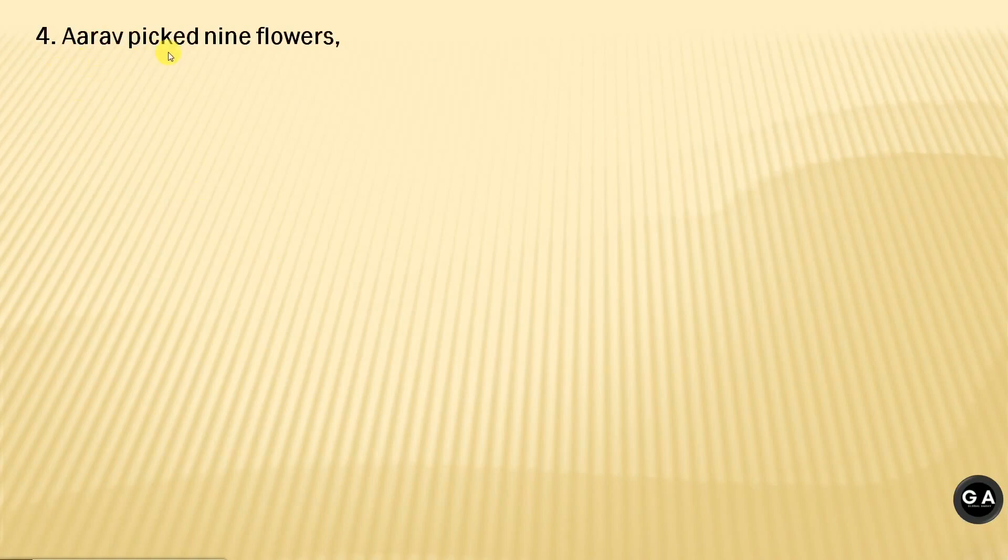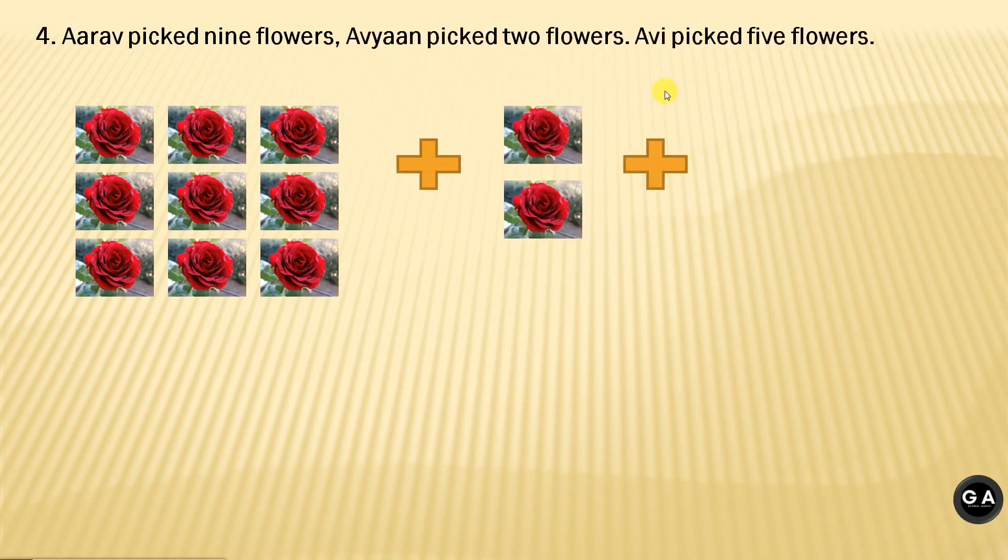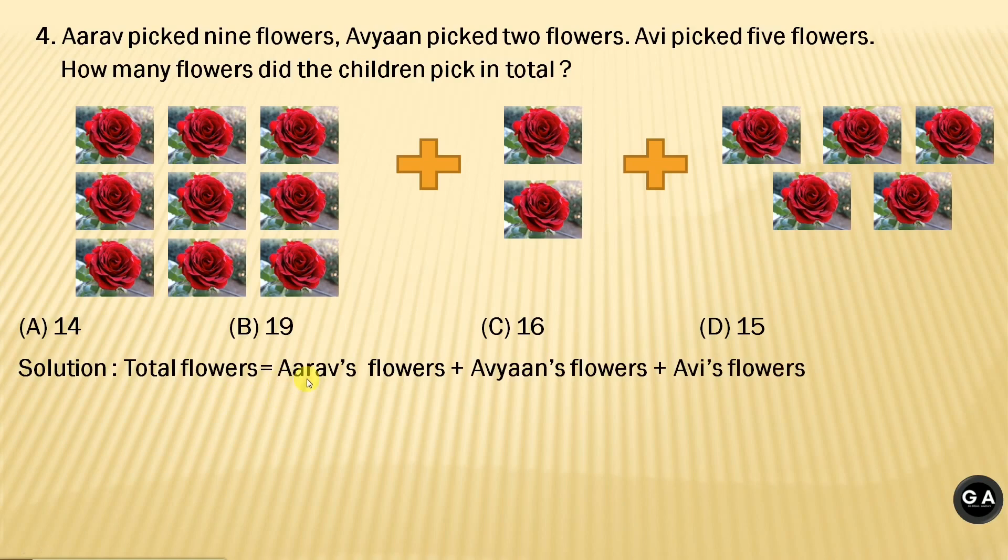Question number 4. Aarav picked 9 flowers, Avyan picked 2 flowers, and Avi picked 5 flowers. How many flowers did the children pick in total? Well friends, super easy question. We just need to add the flowers. Options are: option A, 14; option B, 19; option C, 16; and option D, 15. Solution: Total flowers equals Aarav's flowers plus Avyan's flowers plus Avi's flowers, equals 9 plus 2 plus 5 equals 16. So, the correct option is option C.